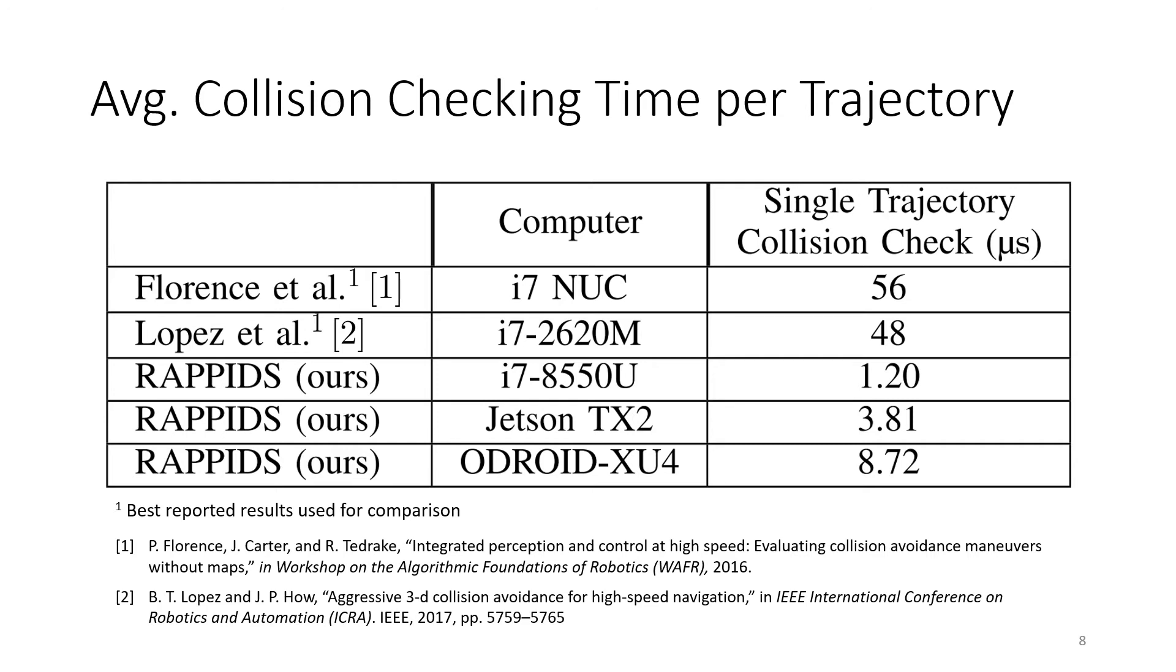Here we're comparing against two other methods, which are the first two lines in this table, both of which are KD tree-based methods. Basically that means they treat each pixel in the depth image as an individual obstacle, and then organize those into a special data structure called the KD tree.